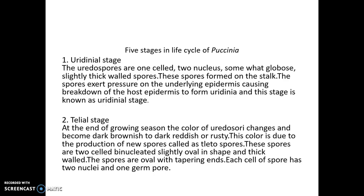What is the uredinal stage? In the uredinal stage, we always find a uredospore — you have to remember it. In this first phase, in late spring, vertically elongated reddish brown spots appear on the leaves and stem of the wheat plant. The uredospores are one-celled, two-nucleate, slightly thicker spores formed on a stalk. The spores exert pressure on the uredinal layer epidermis, causing breakdown of the host epidermis to form uredinia, and this stage is known as the uredinal stage.